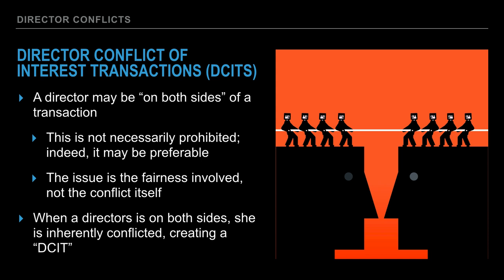A director conflict of interest transaction is just when a director is on both sides of a deal. It's not necessarily prohibited; it's not necessarily unfair. Having a venture capitalist on your board is great because you'll probably have an audience with them when you need more money. But it does call into question the conflicts that arise in a person's mind, and so we label those as director conflict of interest transactions.